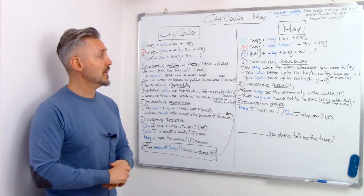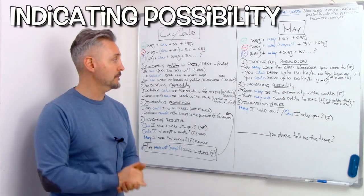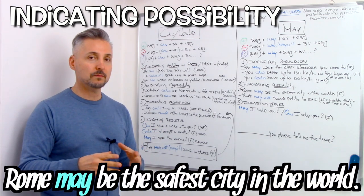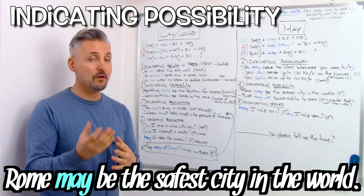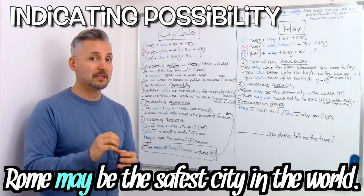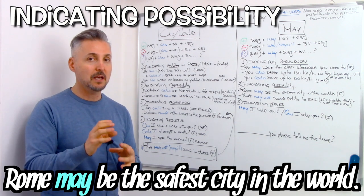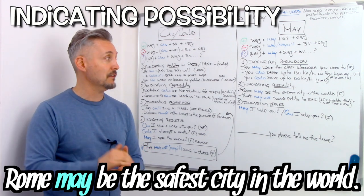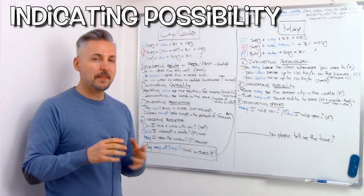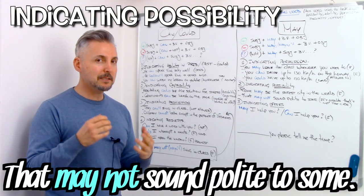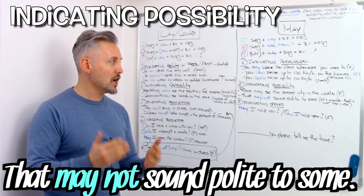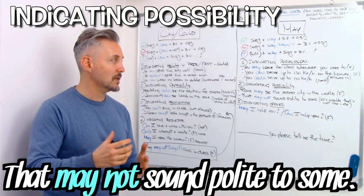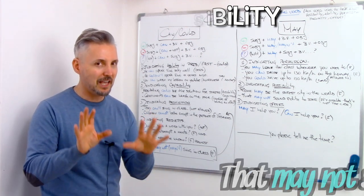The second usage of may is to indicate possibility. Rome may be the safest city in the world — this is a very formal situation, and it means there is a possibility, it's not for sure. For example: that may not sound polite to some — it is possible that's not the case.